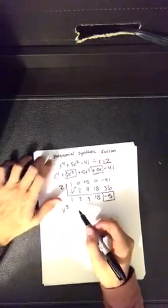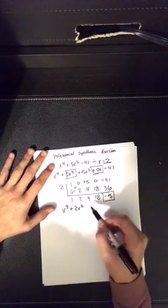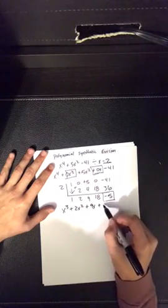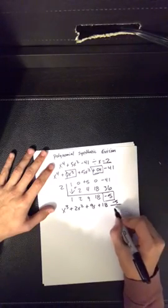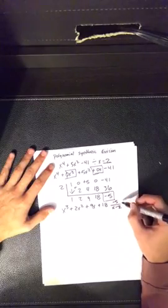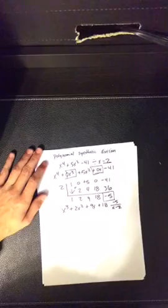Now our answer would be x to the third, because it's one less degree than our original problem, plus 2x squared plus 9x plus 18, with the negative 5 remainder over x minus 2. Your remainder always goes over your divisor, and that is synthetic division.